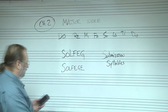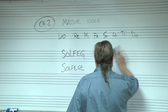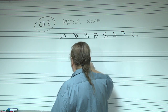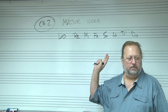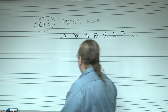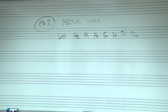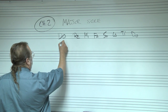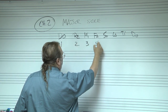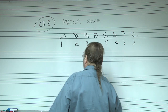By now everybody should be familiar with half steps and whole steps. The solfege syllables function in a major scale like this: Do, Re, Mi, Fa, Sol, La, Ti, Do. We can also convert these to numbers: one, two, three, four, five, six, seven, one. These numbers have a lot of function in music theory as well.